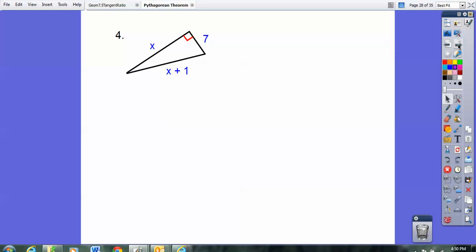Let's try this one here. This one has x in two places. It has an x on this leg right here and an x on the hypotenuse. Let's go ahead and do the Pythagorean theorem, and we get x squared plus 7 squared equals the hypotenuse x plus 1 squared.